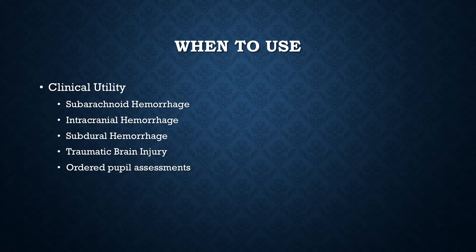When is it appropriate to use a pupilometer? I recognize I'm coming from a unique perspective as a neurotrauma nurse in an ICU, but we're really looking at stroke patients, any kind of traumatic brain injuries, any bleeding of the brain whether caused by stroke, aneurysm, etc. In addition, I've seen trauma patients have ordered pupil assessments when they are on a PCA delivering an opioid. Any condition that the doctor, neuroscientist, or neurosurgeon feels is appropriate to monitor fluctuations in pupil size and reactivity is the most appropriate time to use this pupilometer.